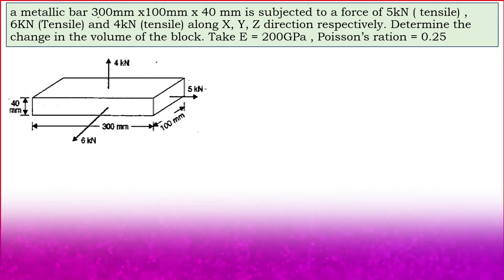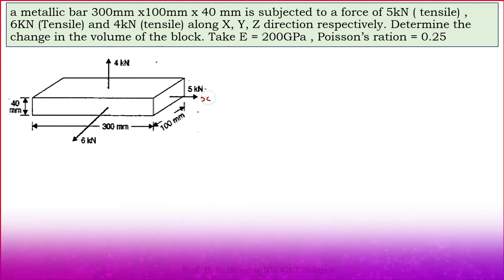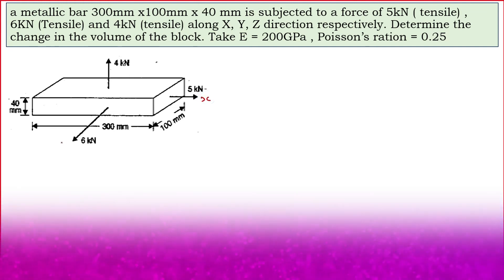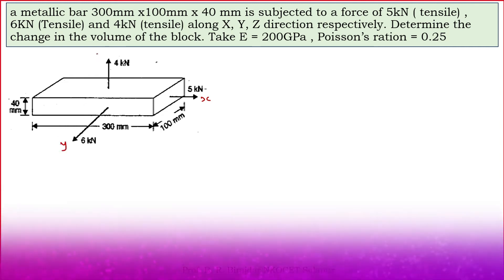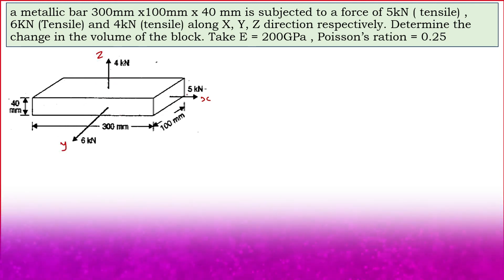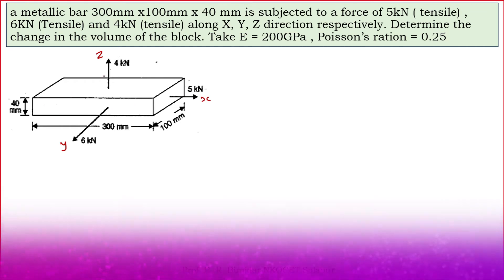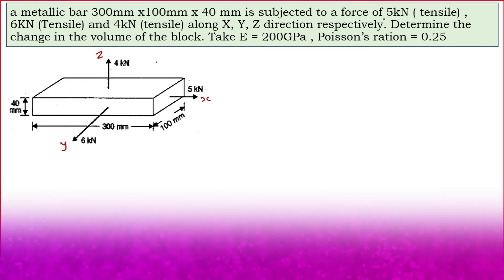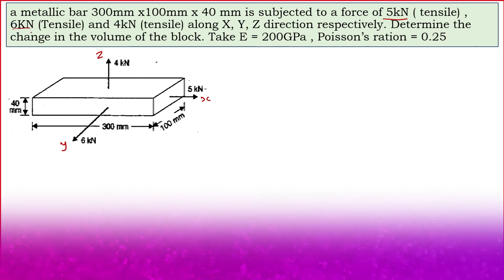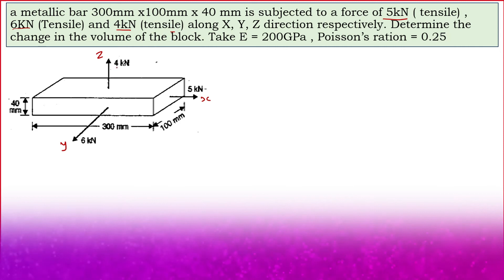A metallic bar 300 mm, 100 mm and 40 mm. So in x direction it is 300, in y it is 100, and in z — the vertical height — it is 40 mm. It is subjected to a tensile force of 5 kilonewton in x direction, 6 kilonewton tensile in y direction, and 4 kilonewton tensile in z direction.